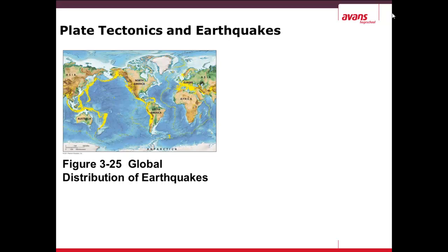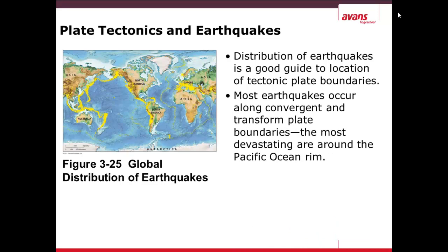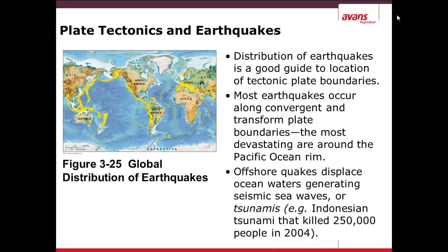Plate tectonics and earthquakes are very deeply related. The distribution of earthquakes is a good guide to showing where plate tectonic boundaries are. On the left-hand side you see the distribution of earthquakes along the Earth, and most of these earthquakes occur along the convergent and transform plate boundaries, with the most devastating being in the Pacific Ocean Rim. Offshore earthquakes can often displace ocean waters, and these generate seismic sea waves, also called tsunamis. A very tragic incident happened in 2004, a tsunami in Indonesia that killed approximately 250,000 people. Tsunami is Japanese for 'harbor wave.'